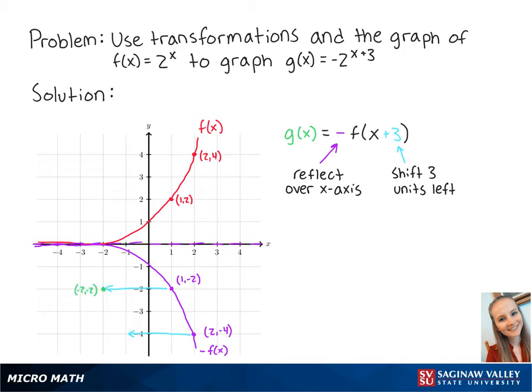So our new points are at negative 2, negative 2 and negative 1, negative 4. Connecting these points gets the graph of g of x. This is the final answer.